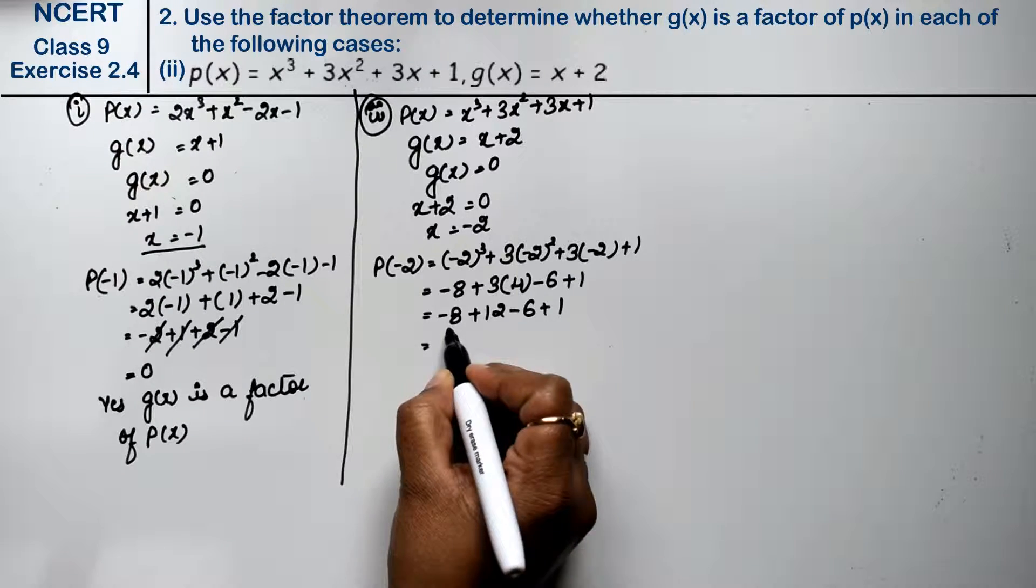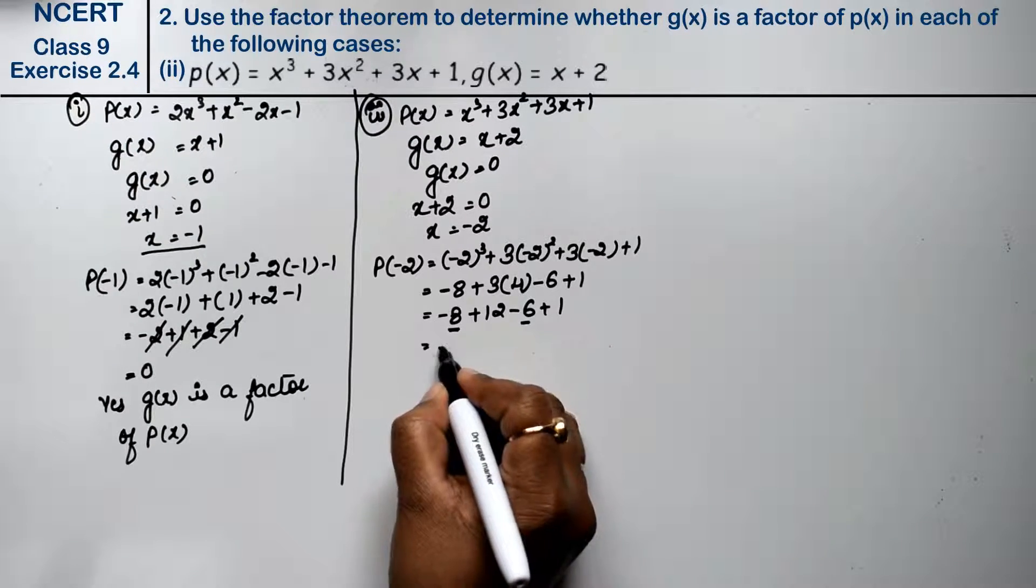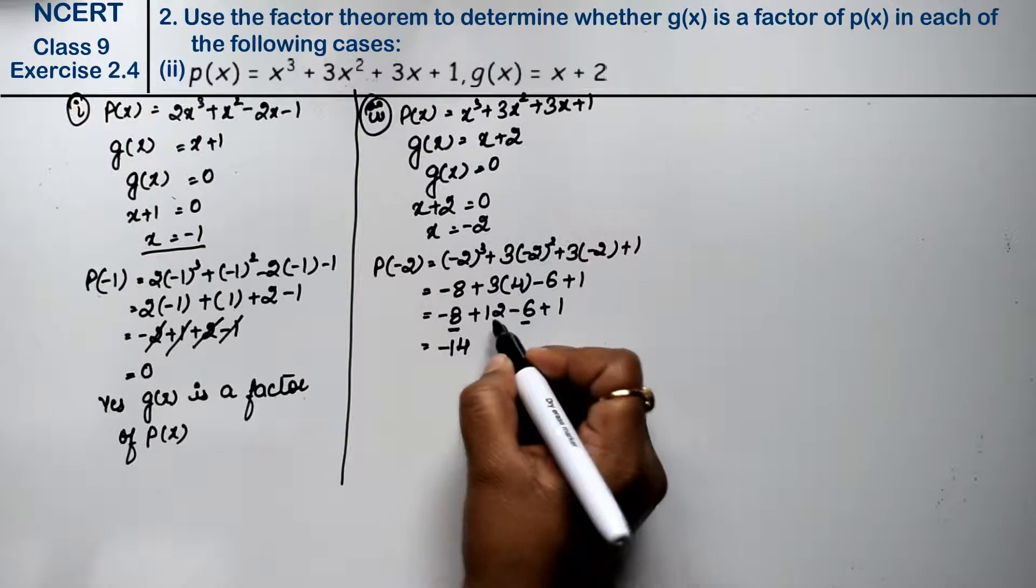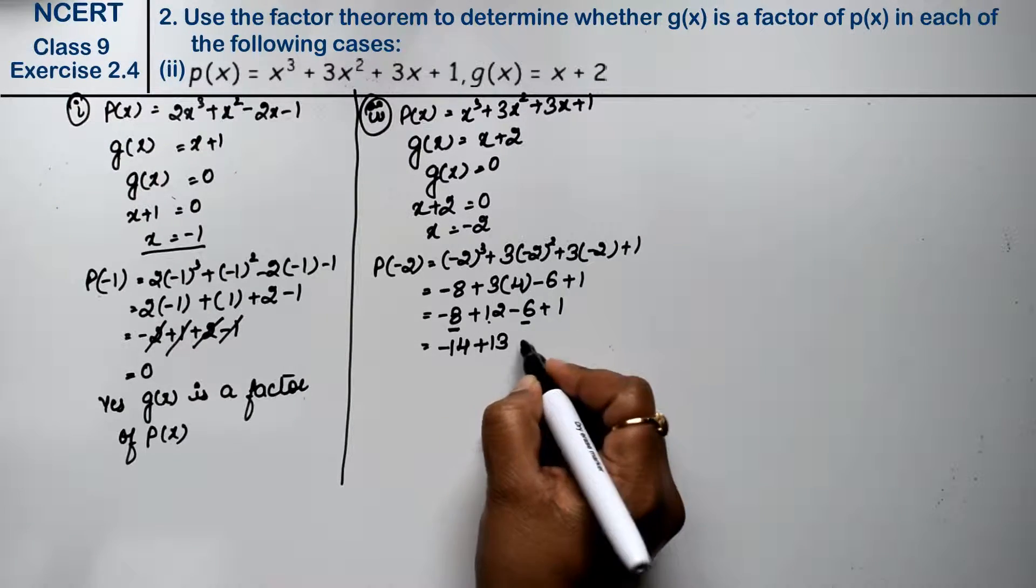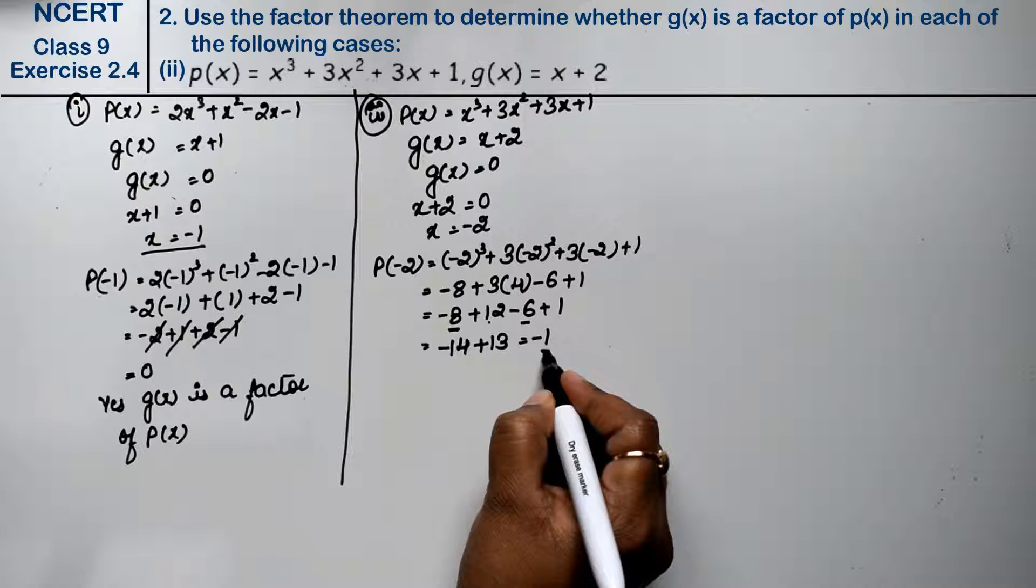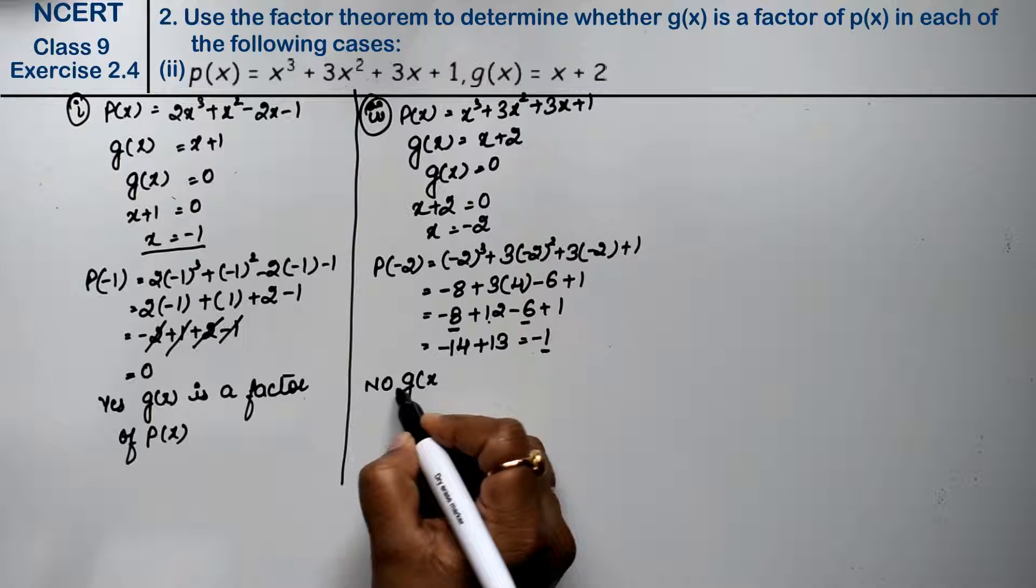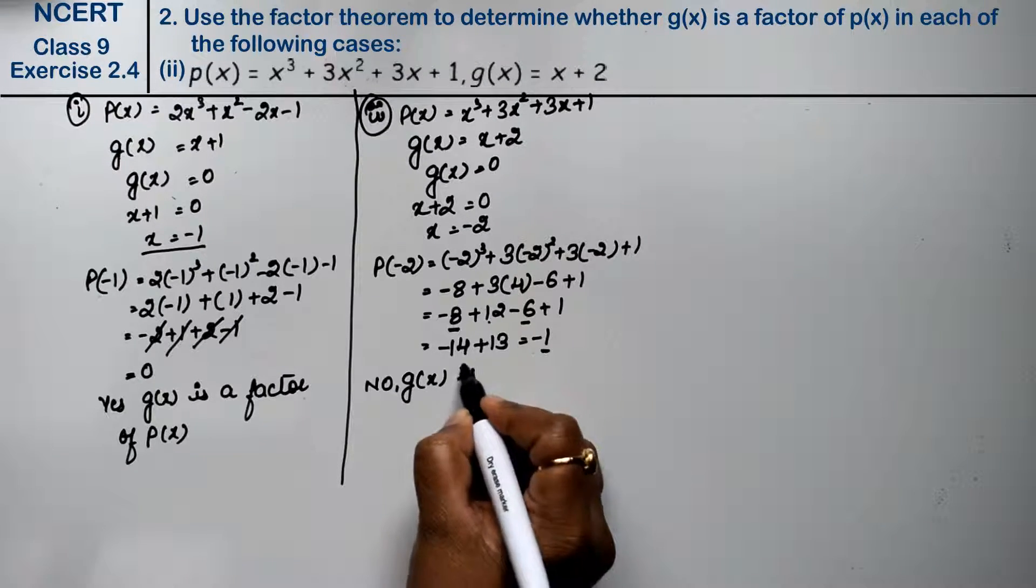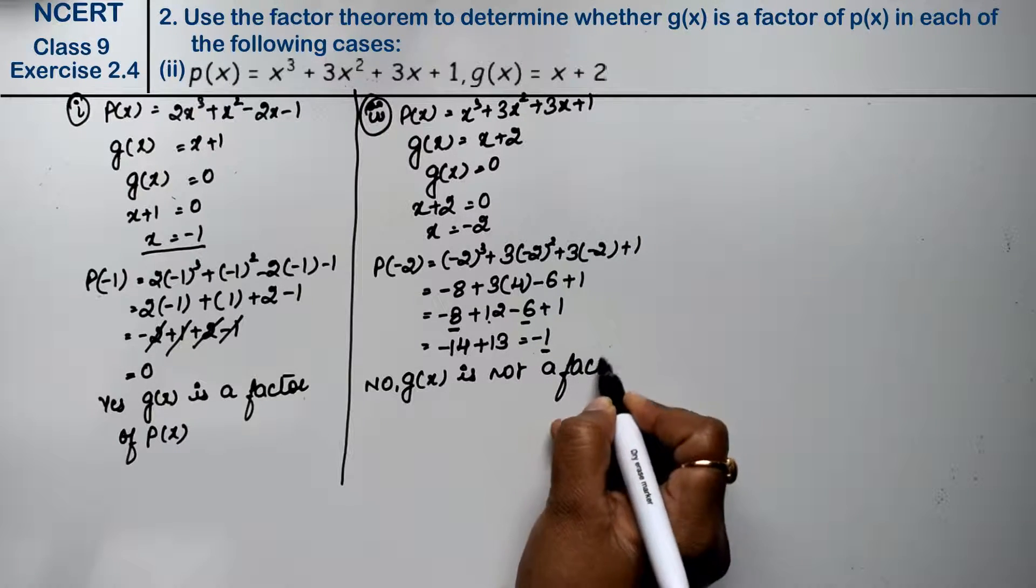So: -8 + 12 - 6 + 1. So let's see here. The minus values: -8 and -6, that's -14. The plus values: 12 and 1, that's plus 13. So the answer is -14 + 13 = -1. This should be 0, but it's not 0. So no, g(x) is not a factor of p(x).